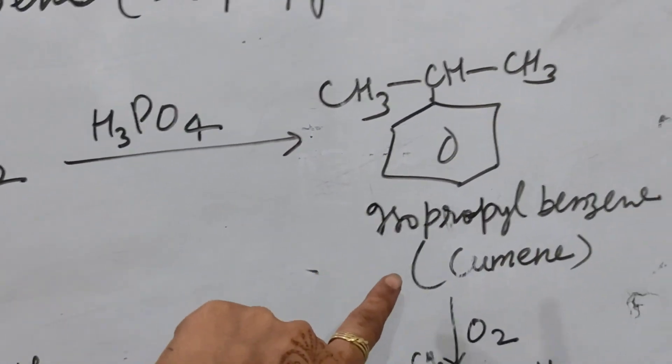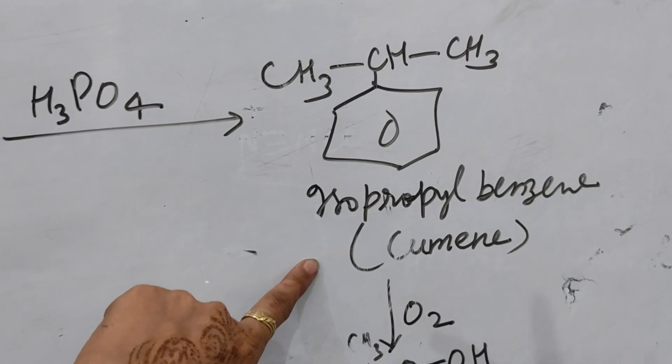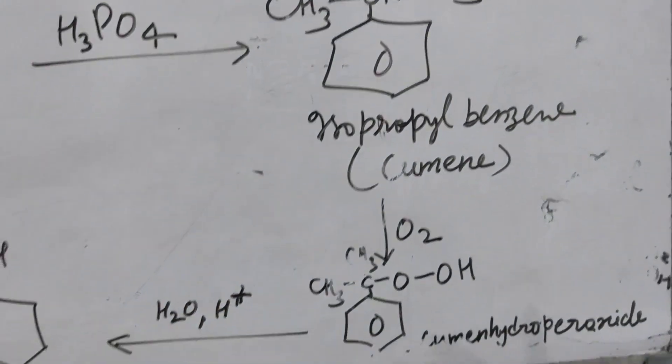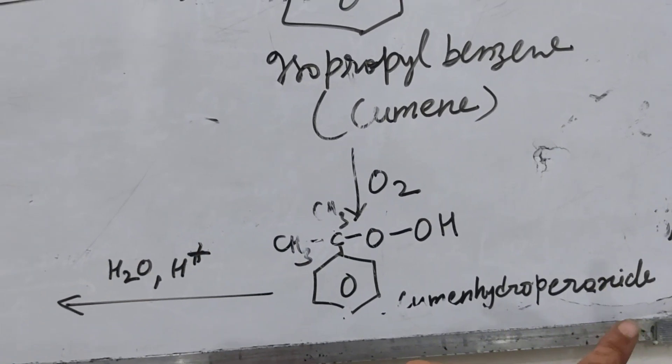We get an addition product which is known as isopropylbenzene, commonly known as cumene. This cumene on oxidizing, after reacting with oxygen, gives a product that is called an addition product which is known as cumene hydroperoxide.